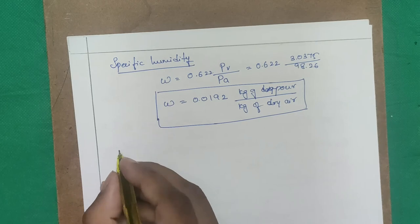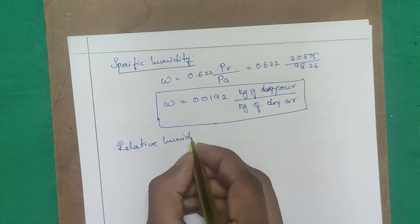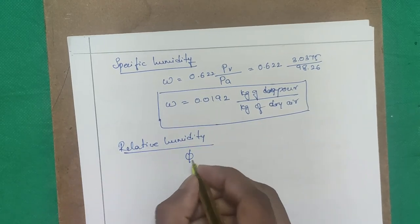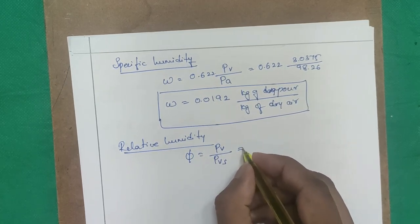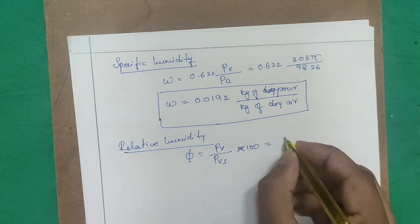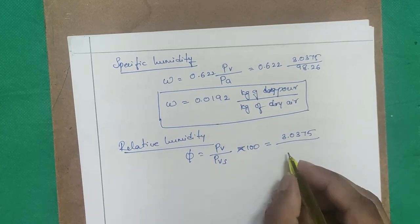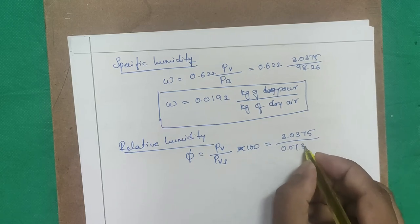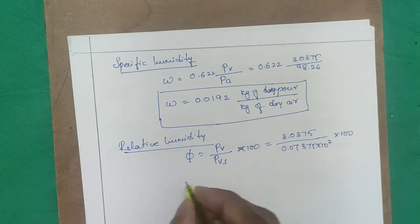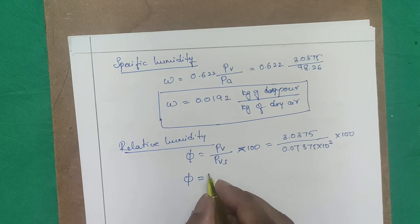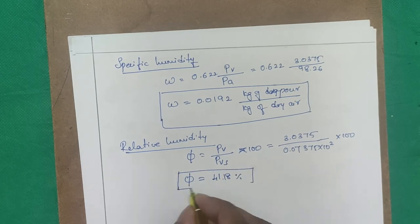Step 4 — Relative humidity: φ = PV / PVS × 100 = 3.0375 / 7.375 × 100 = 41.18%.